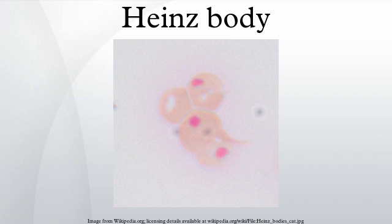Heinz bodies are formed by damage to the hemoglobin component molecules, usually through oxidant damage or from an inherited mutation. As a result, an electron from the hemoglobin is transferred to an oxygen molecule, which creates a reactive oxygen species that can cause severe cell damage leading to premature cell lysis.